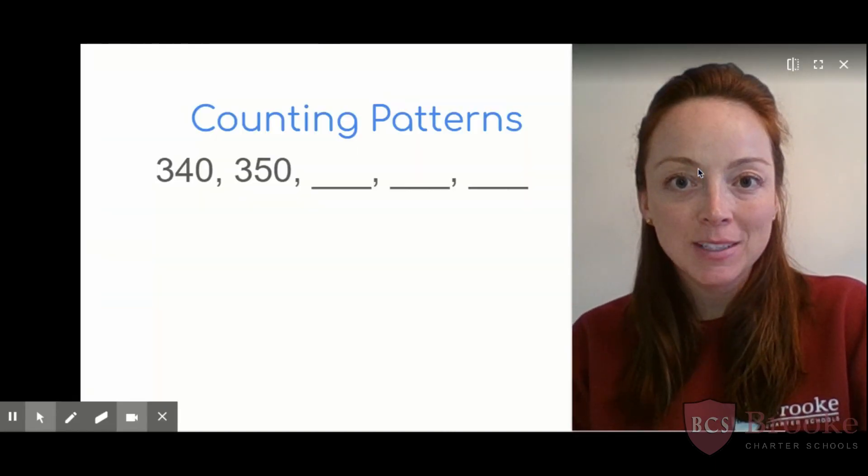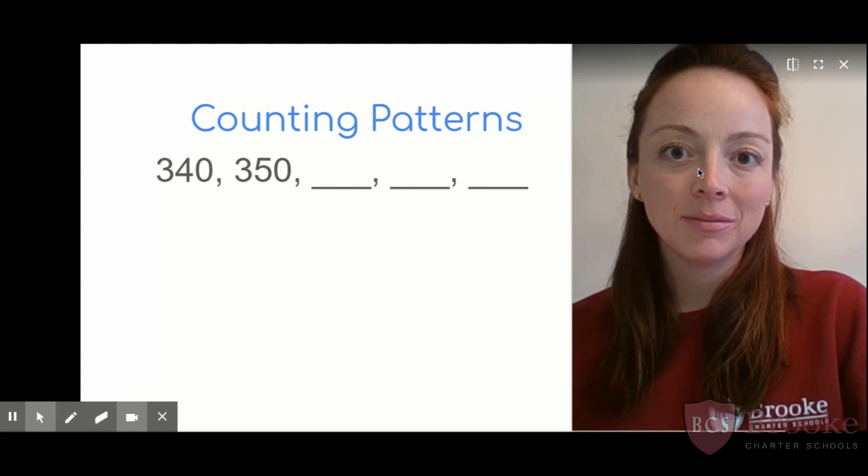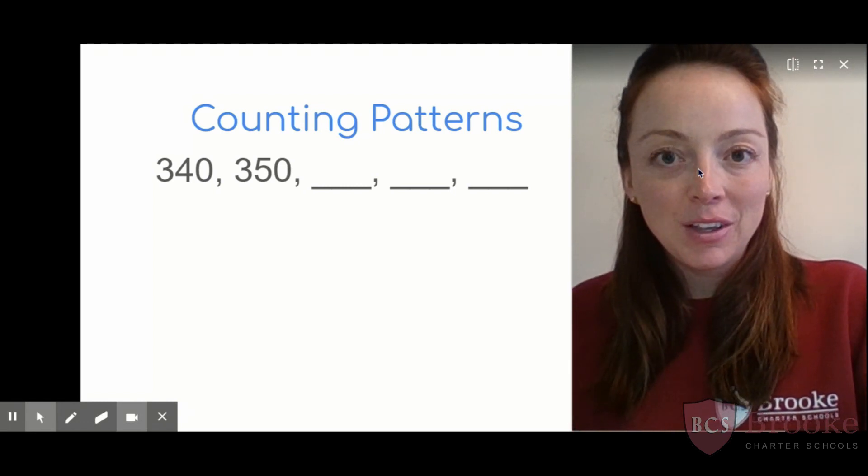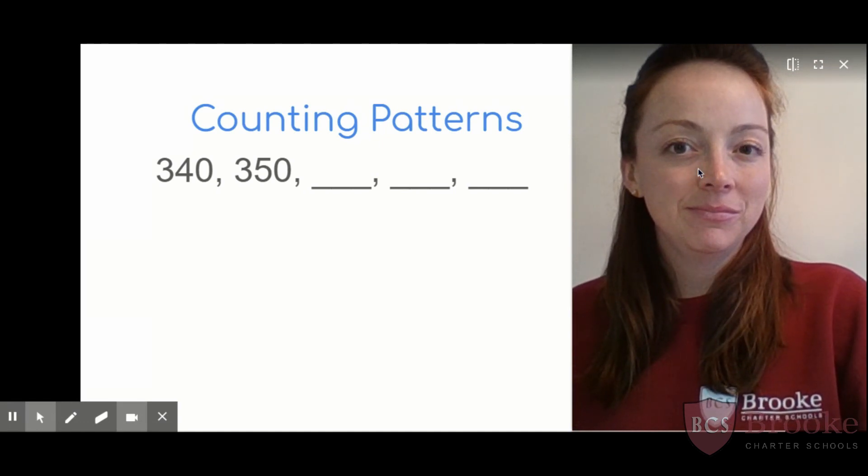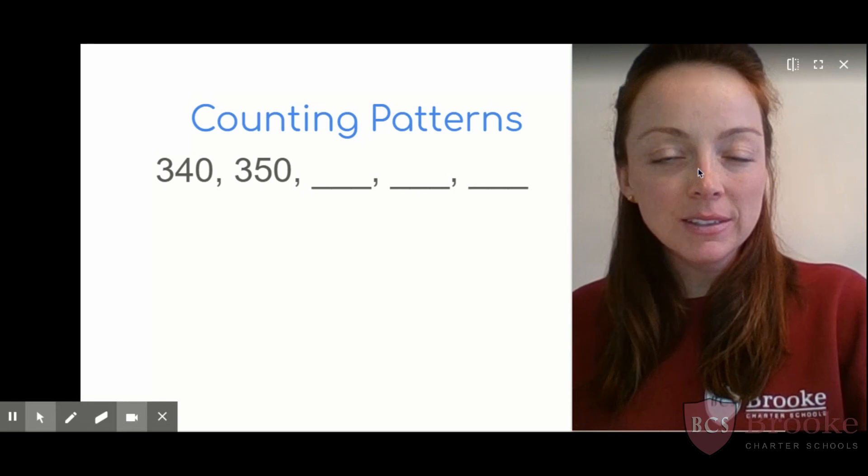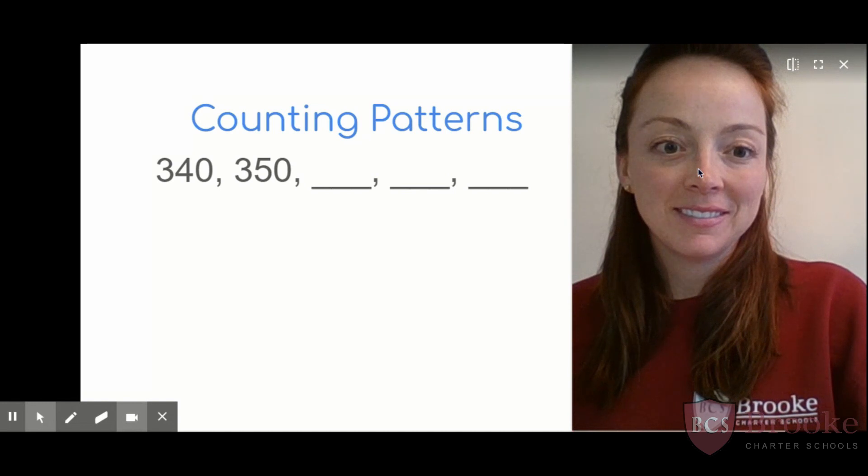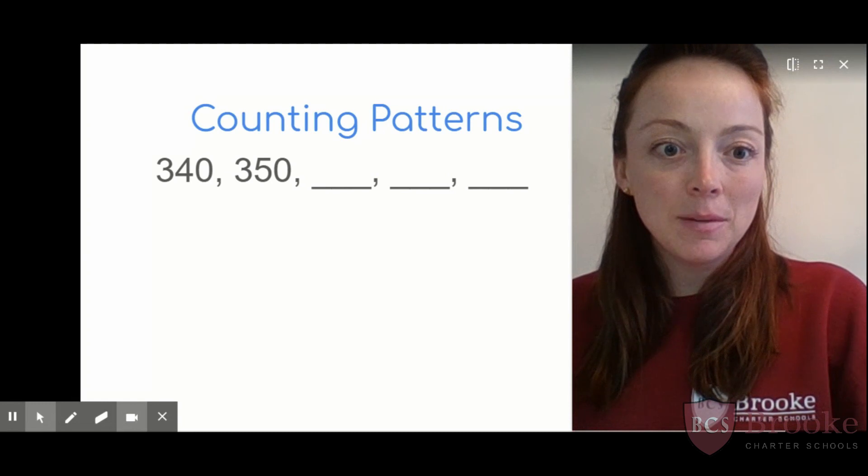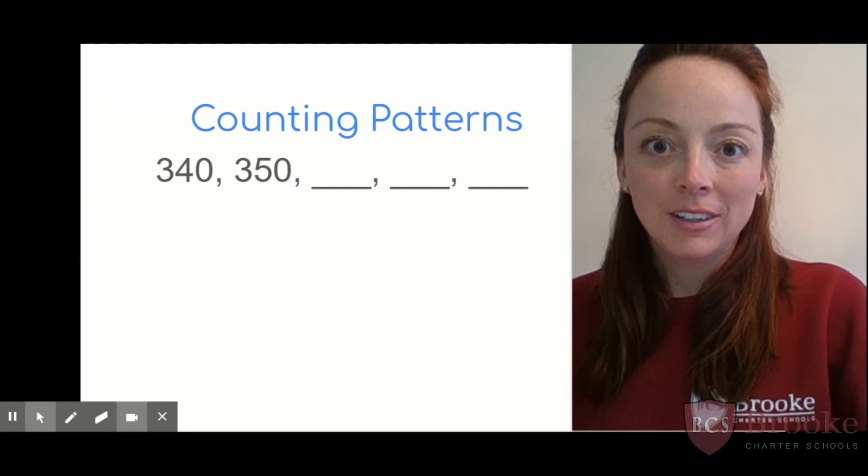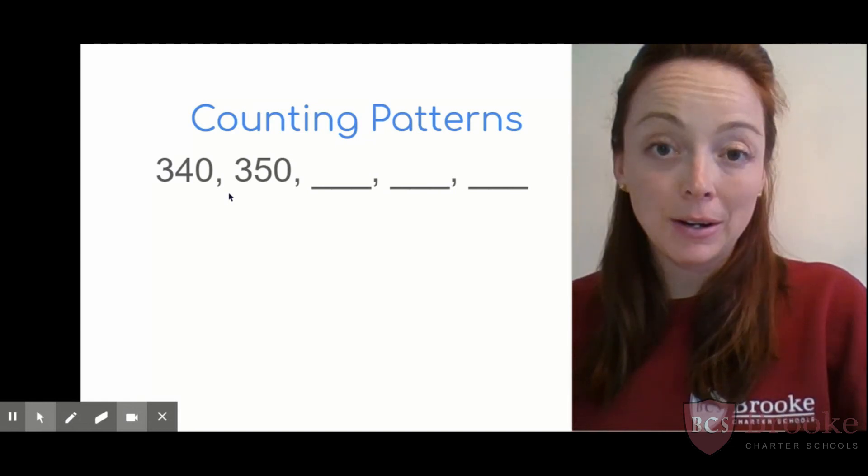Now we're going to continue our practice with counting patterns. Let's take a look at our first pattern and first ask ourselves, what is it counting by? Read this pattern with me, get ready, go. 340, 350. Hmm, what's getting bigger? The ones, the tens, or the hundreds? Yeah, I noticed the tens getting bigger as well. In this number, how many tens do we have? Good, there are four. What about in 350? Nice, there are five. So I can tell this pattern is getting bigger by 10.